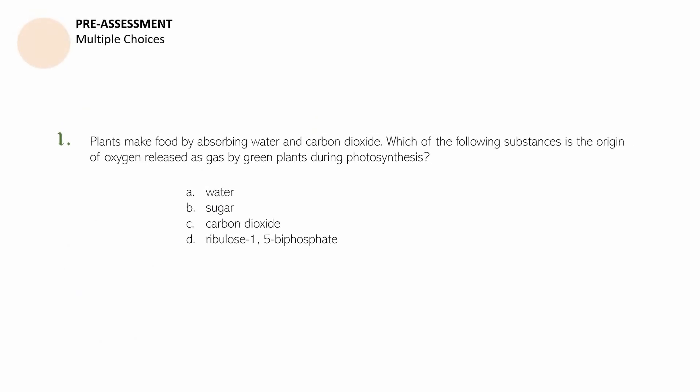You may need an extra sheet of clean paper or your notebooks in answering these questions. Question number one: Plants make food by absorbing water and carbon dioxide. Which of the following substances is the origin of oxygen released as a gas by green plants during photosynthesis? A. Water. B. Sugar. C. Carbon dioxide. D. Ribulose 1,5-bisphosphate.